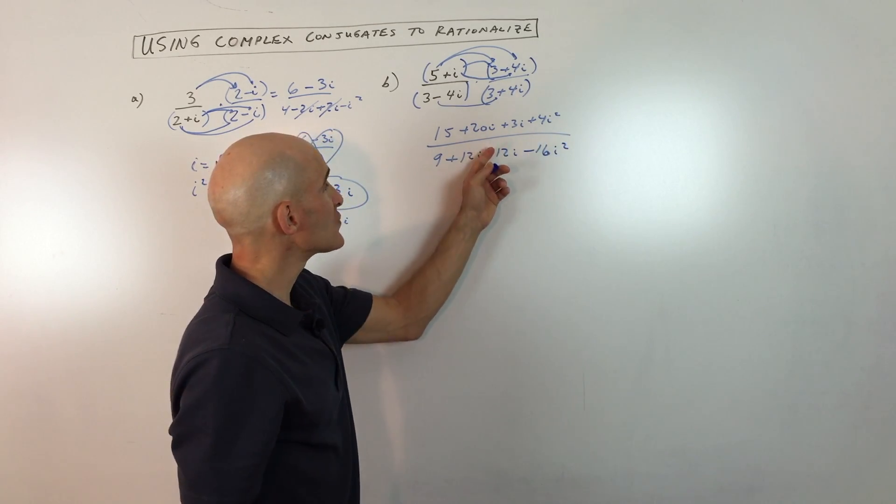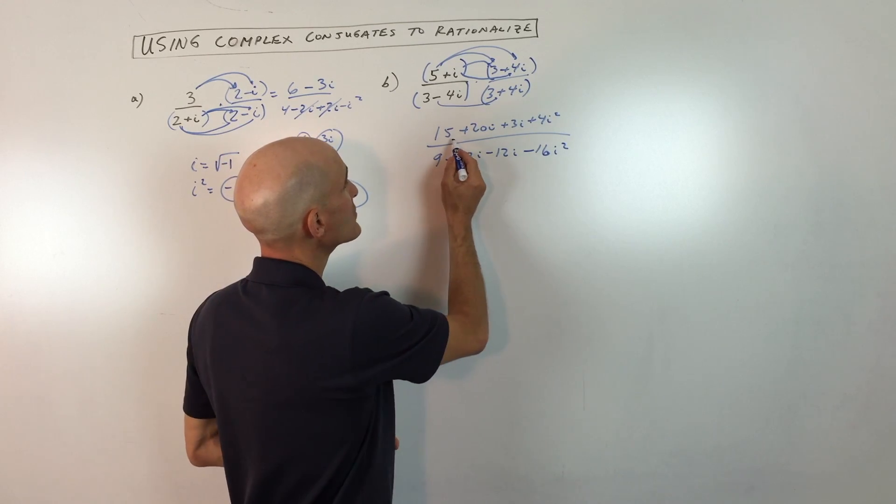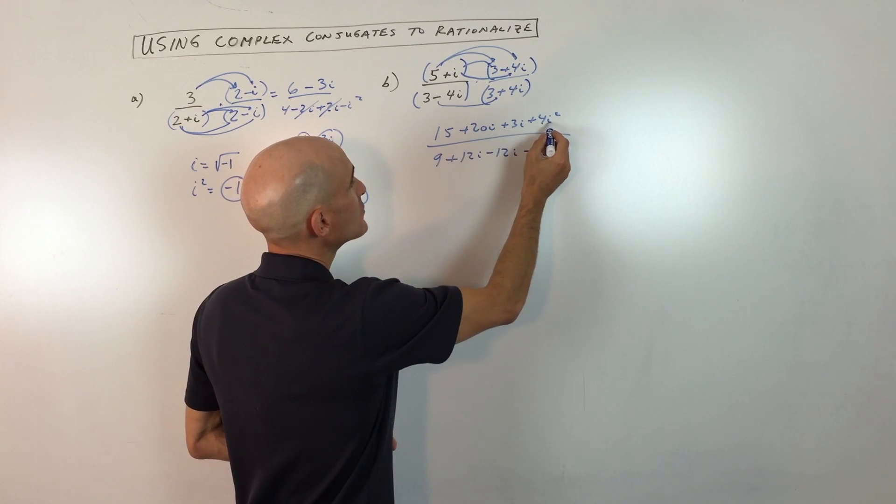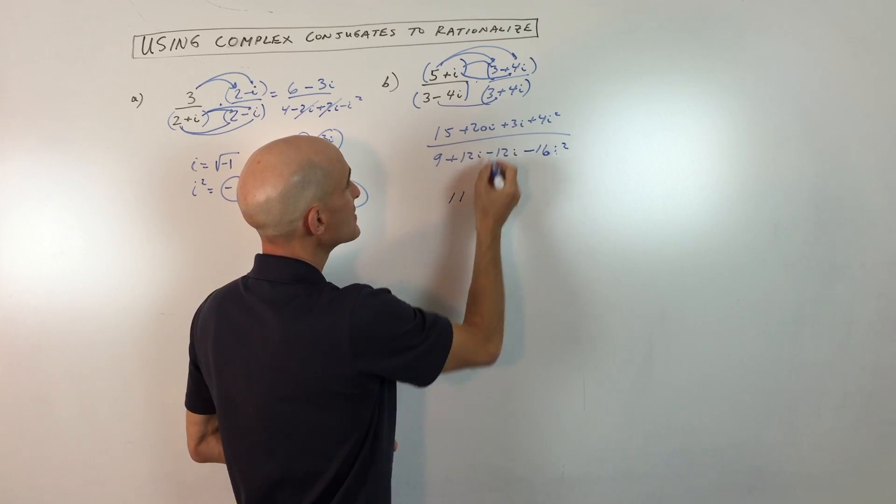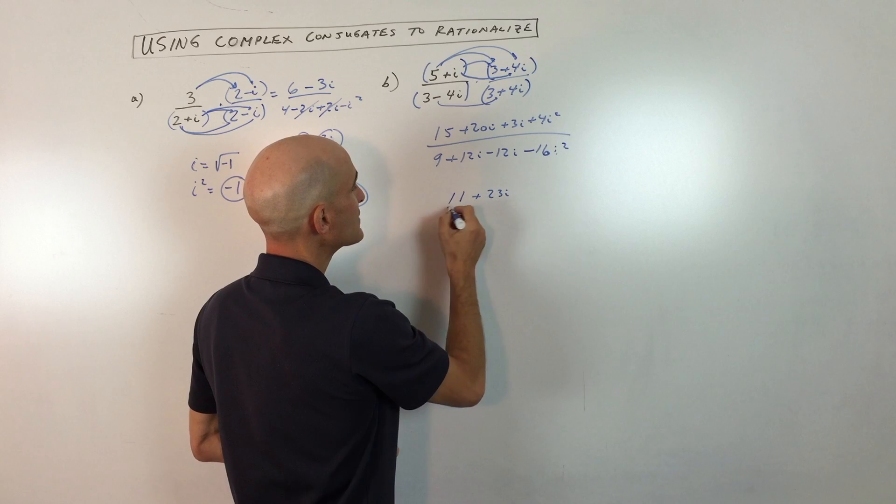So now all we have to do is let's combine like terms. So i squared is negative one times four is negative four plus 15 is 11, and this comes out to 23i. That's for the numerator.